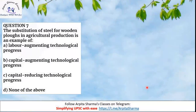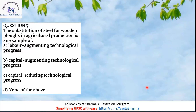Question 7: The substitution of steel for wooden plows in agricultural production is an example of — (A) labor augmenting technological progress, (B) capital augmenting technological process, (C) capital reducing technological process, or (D) none of the above. The correct answer is option B — capital augmenting technological process.